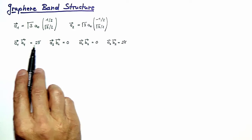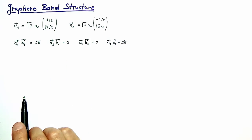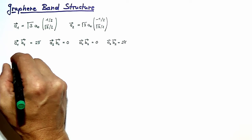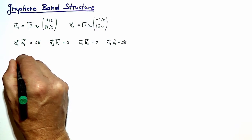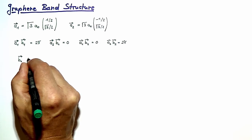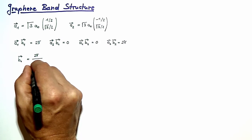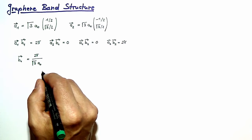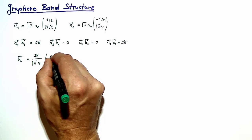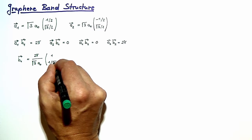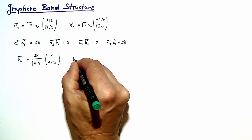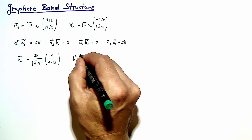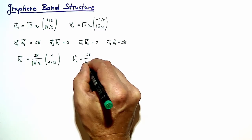We will not go through the details of the calculation, but you will be able to work out the result for the reciprocal lattice vectors. b1 is given by 2π divided by √3 times the inter-atom distance a₀, times the vector (1, 1/√3), and b2 is given by 2π over √3 times a₀ times (−1, 1/√3).